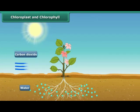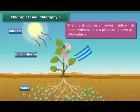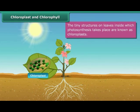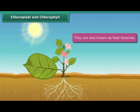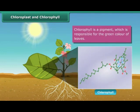Leaves make their food with the help of photosynthesis. The tiny structures on leaves inside which photosynthesis takes place are known as chloroplasts. Due to their role in food production, they are also known as food factories. Chloroplasts are green in color. They get their color from a pigment called chlorophyll. Chlorophyll helps leaves prepare food.